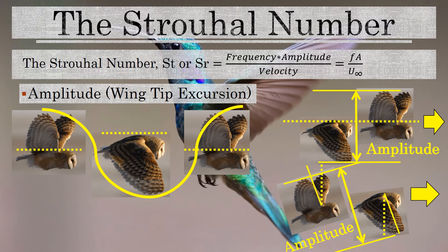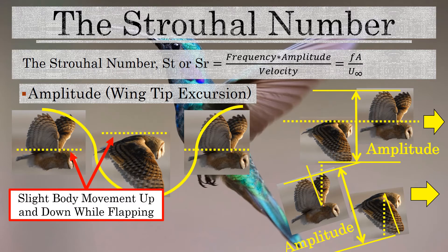When we talk about amplitude in this equation, we're really talking about what's termed the wing tip excursion — the distance between the wing tip when the wings are all the way up versus all the way down. Something to keep in mind is that when the bird is flapping, its body isn't staying level; it tends to rise slightly during the down stroke. So we line up the body of the bird to remove that height difference, and then take the distance between the wing tip positions up and down as our amplitude.